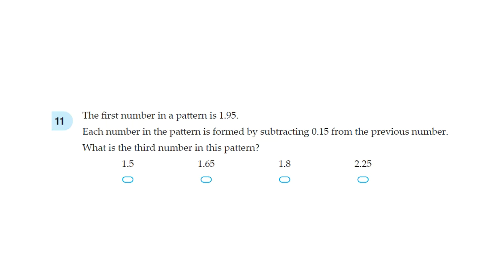Question 11. The first number in a pattern is 1.95. Each number in the pattern is formed by subtracting 0.15 from the previous number. What is the third number in this pattern?